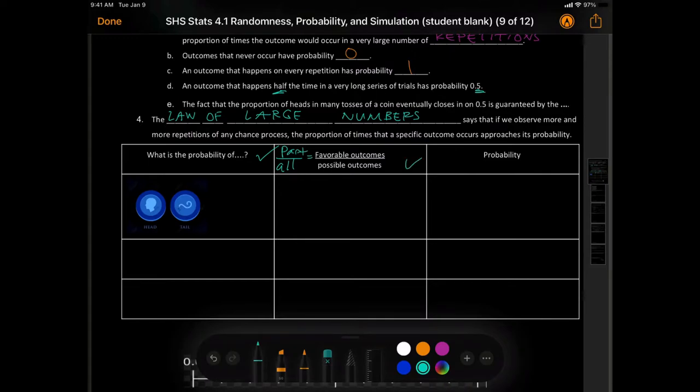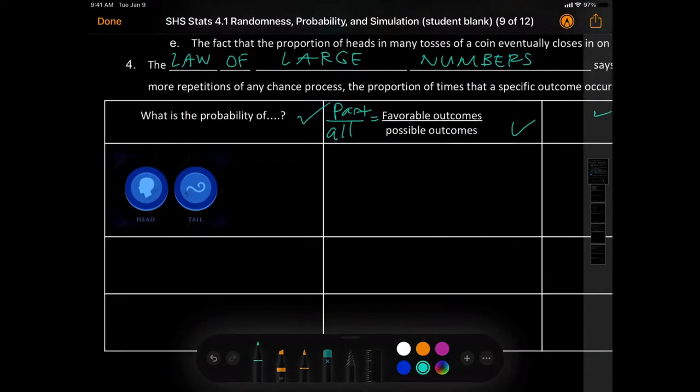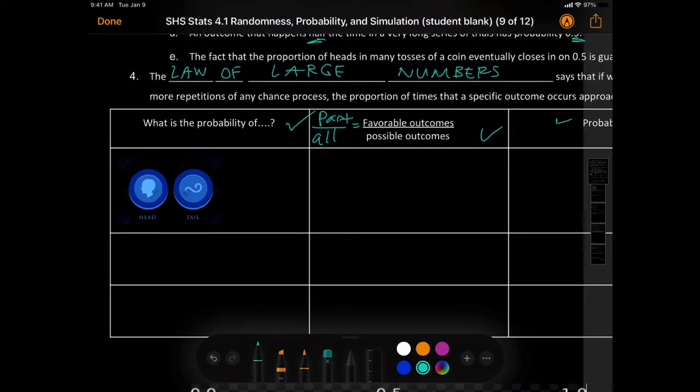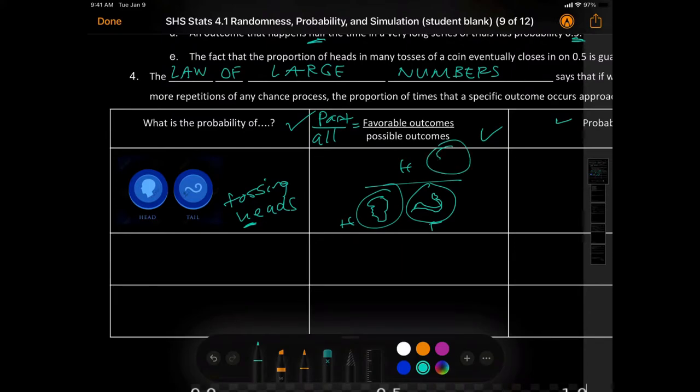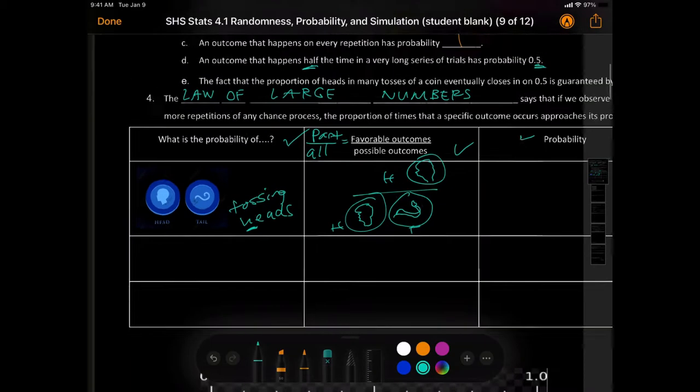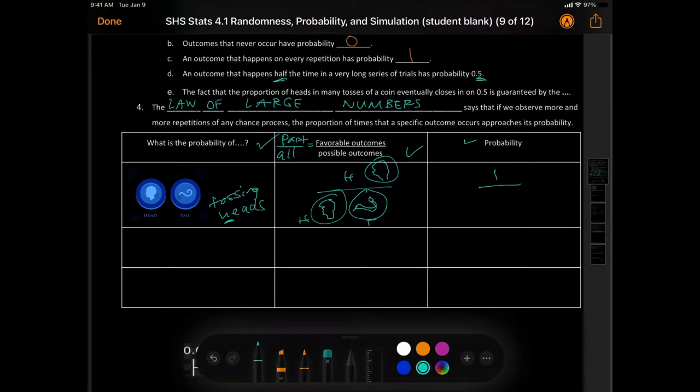So, if you have heads or tails, let's say I want to get tossing heads. Well, you have the heads and this is the tail of the monkey. So, there's how many of those? There's a head, there's a tail, and we just want heads. So, that means your probability is 1 over 2.